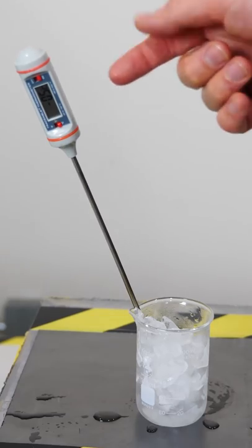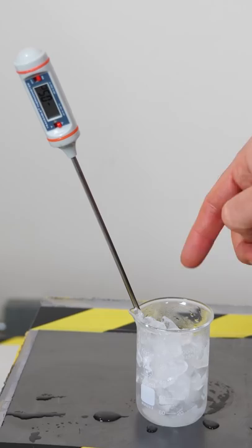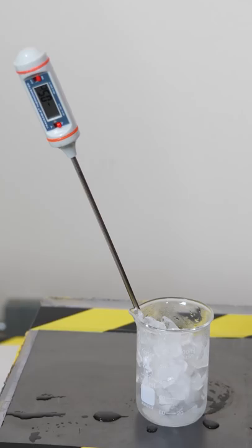So right now I just have some ice in a beaker here. Right now it's reading negative 0.5 degrees Celsius. This might not be exactly pure water, that's why it's a little bit below zero degrees Celsius here. But now watch what happens when I add soda.